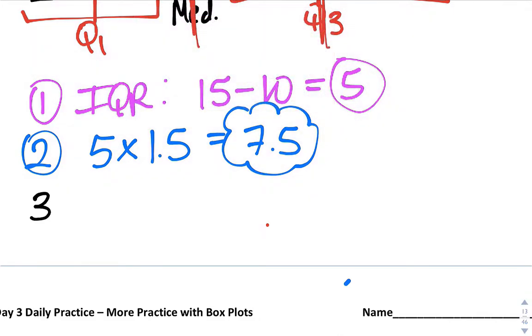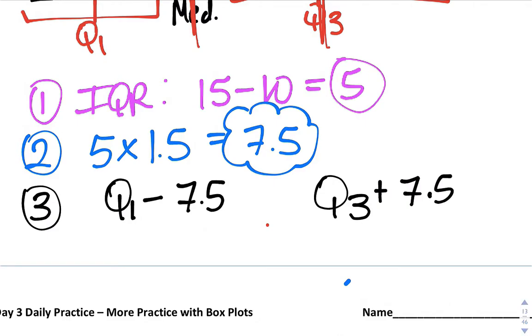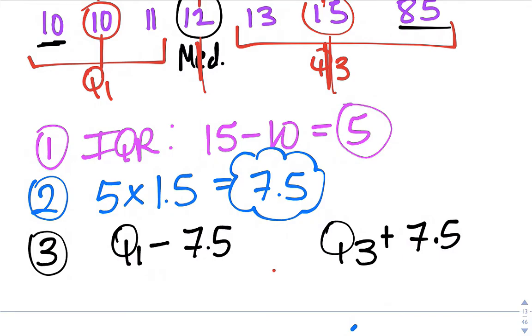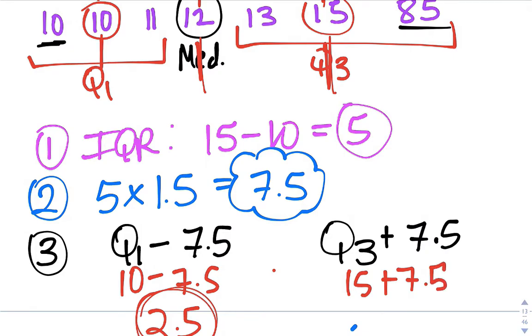Step three to find the lower fence is Q1 minus your magic number, and then find the upper fence is Q3 plus our magic number. So in this case we have Q1 and Q3, we have 10 and 15. So 10 minus 7.5 which is 2.5, this is the lower fence. And we have 15 plus 7.5, so it should be 22.5. Okay, so these are our fences.